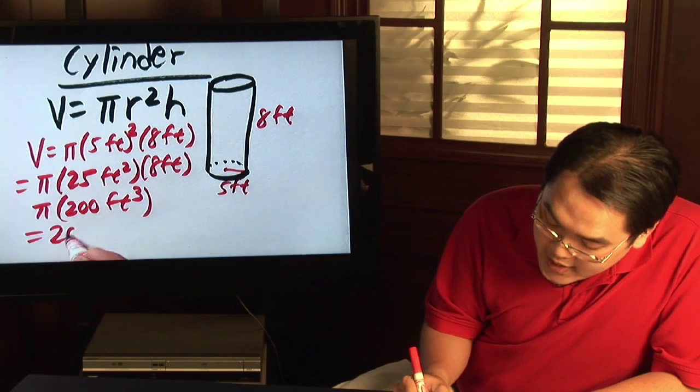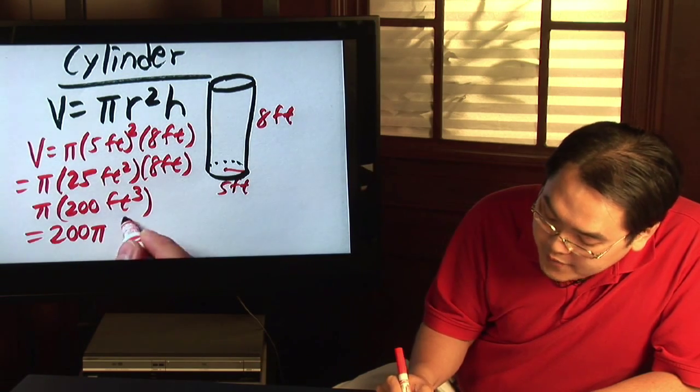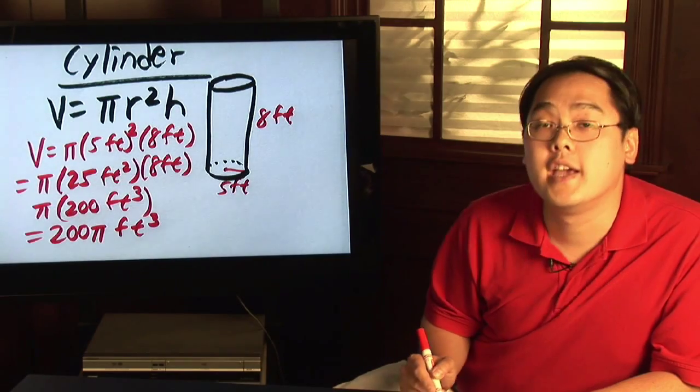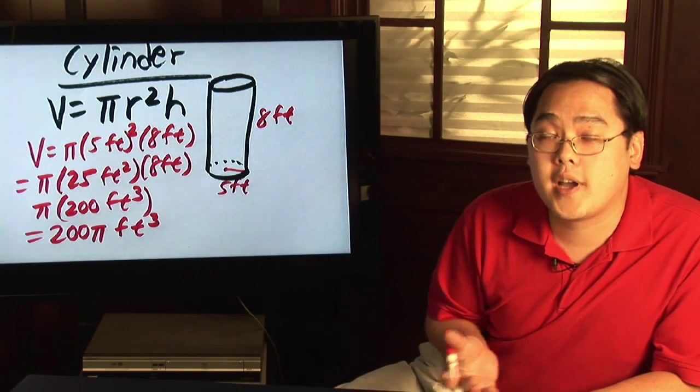So as a result, the exact value of this particular cylinder would be two hundred pi cubic feet. But if you wanted to find a decimal approximation...